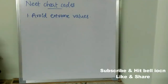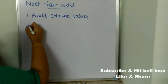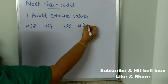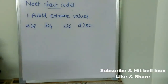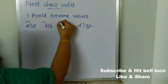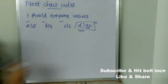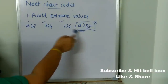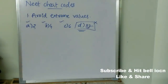Cheat Code 1 is 'avoid extreme values.' For example, if there are four options — 2, 4, 6, and 32 — most students assume 32 is the answer because it looks different. This is a wrong prediction. Whatever value is very different from the rest of the options, avoid it. It is unlikely to be the correct answer, so choose from the remaining options.